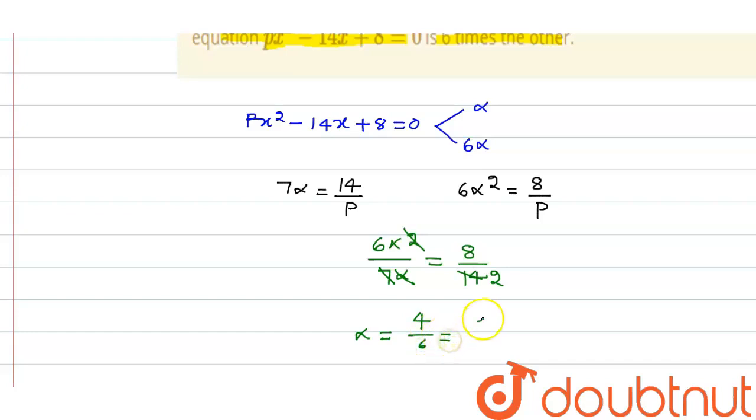I can say this is equal to 2 by 3. Now if alpha is equal to 2 by 3, substitute the value of alpha here. You get 7 into 2 by 3 is equal to 14 upon p. Seven into two is 14, so these will cancel out, and p is equal to 3.